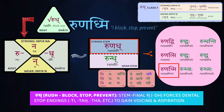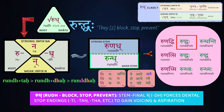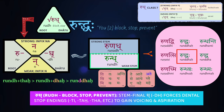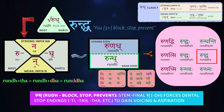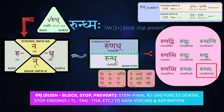Ahaṃ ruṇadmi — I block, stop, prevent — with no sandhi changes. For the other forms, we use the weak stem rund and get runddhaḥ — the two of them block, stop, or prevent — where the voiced aspirate dental causes assimilation. We'll have runddhanti — they block, stop, or prevent. For the second person dual, we get runddhāḥ — you both block, stop, prevent. Notice this is exactly the same as the third person dual. Similarly, yūyam runddha — you three or more block. For the first person: āvāṃ runddhvaḥ — we both block, stop, prevent — and vayaṃ runddhmaḥ — we three or more block, stop, prevent.